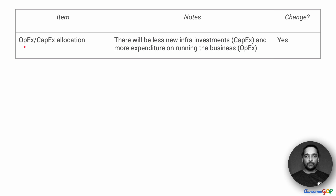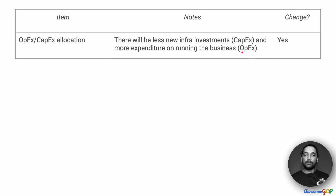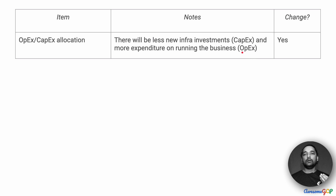OPEX, on the other hand, is operational expenditure — the cost of running the business on a daily basis. With traditional systems, we have a large CAPEX because we need to plan for buildings, networking, and machines. Whereas on the cloud, somebody else is doing that for us, so as a company we don't need to bother as much about CAPEX. OPEX, however, is expected to increase because the cloud is paid per use — the more you use, the higher your operational expenditure.